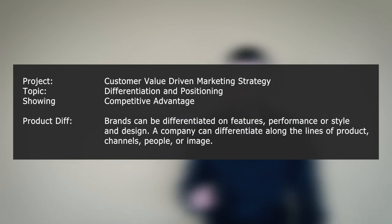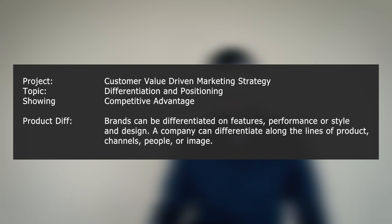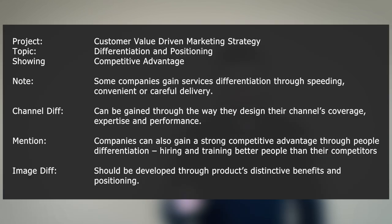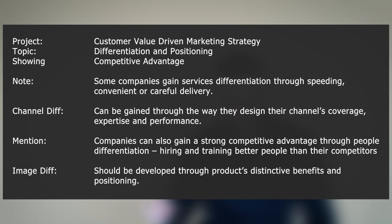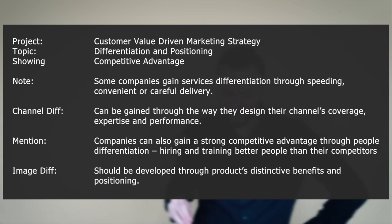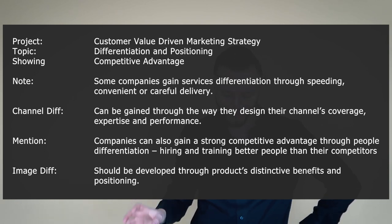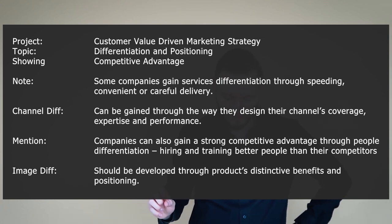For product differentiation, brands can be differentiated on features, performance, or style and design. A company can differentiate along the lines of product, channels, people, or image. Some companies gain services differentiation through speedy, convenient, or careful delivery. Channel differentiation can be gained through the way they design their channel's coverage, expertise, and performance. Companies can also gain a strong competitive advantage through people differentiation — hiring and training better people than their competitors do — and image differentiation should be developed through products, distinctive benefits, and positioning.